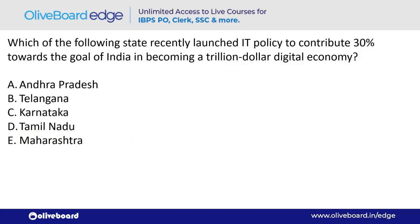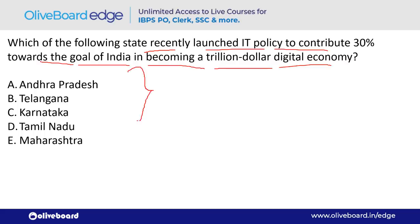Which state recently launched an IT policy to contribute 30% towards the goal of India becoming a trillion-dollar digital economy? The answer is Karnataka — option C.